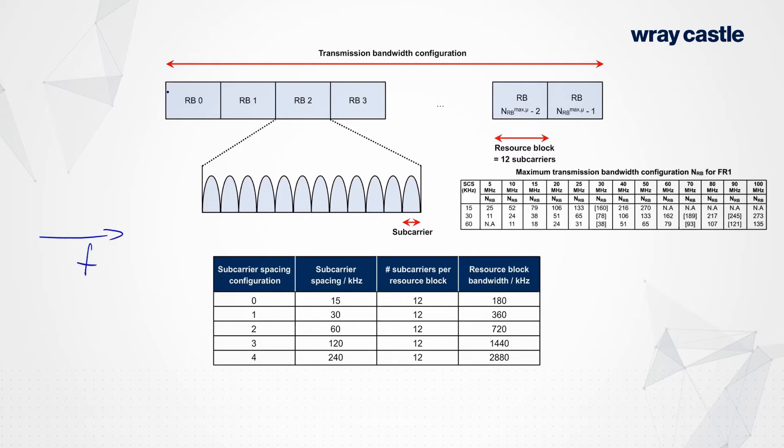So in the frequency domain, we maintain the concept of a resource block. Now the number of resource blocks in a transmission bandwidth, it kind of depends, like it depended in LTE. One thing that hasn't changed from LTE though, is the number of sub-carriers that we support per resource block. So there are always 12 sub-carriers in a resource block. It doesn't matter how many thousands of actual sub-carriers there might be in the frequency domain. We group them together in groups of 12, just like we did in LTE. So that thing never changes. That number never changes.